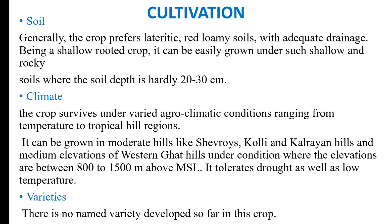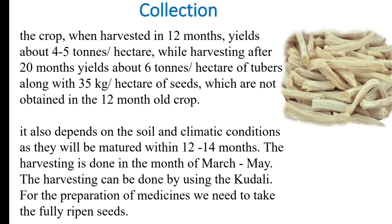Varieties: there is no named variety developed so far in this crop. Collection: the crop when harvested in 12 months yields about 4 to 5 tons per hectare, while harvesting after 20 months yields about 6 tons per hectare of tubers along with 35 kg per hectare of seeds. It also depends on soil and climatic conditions, and may be matured within 12 to 14 months.